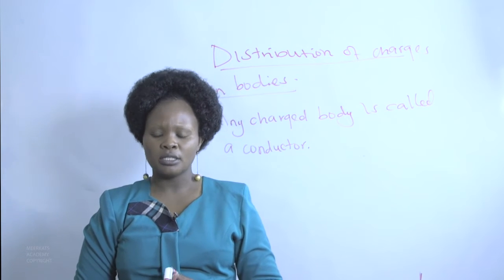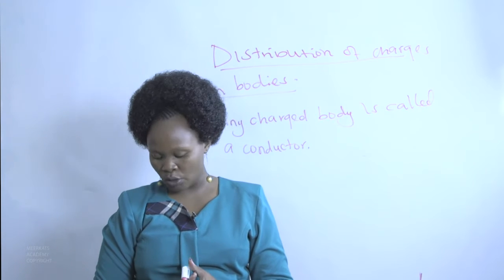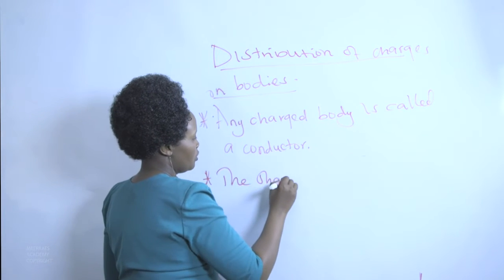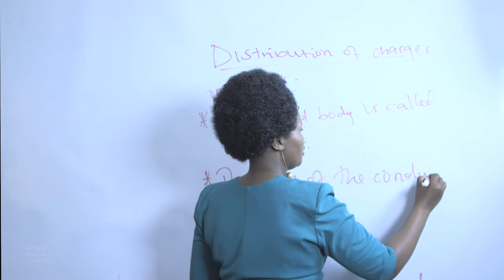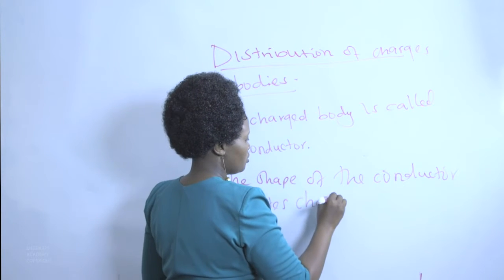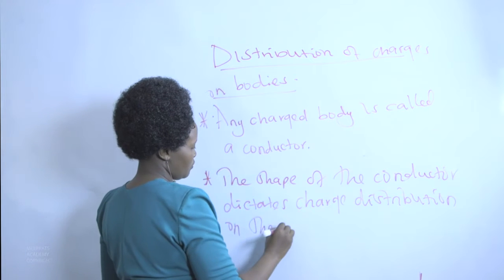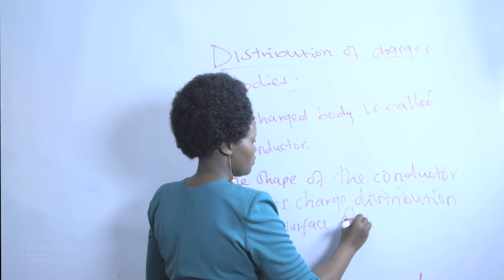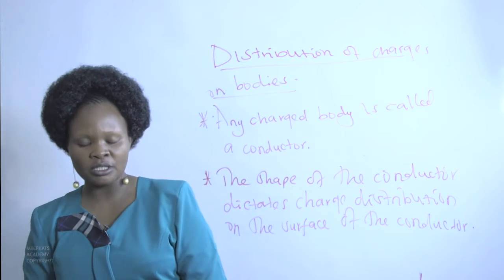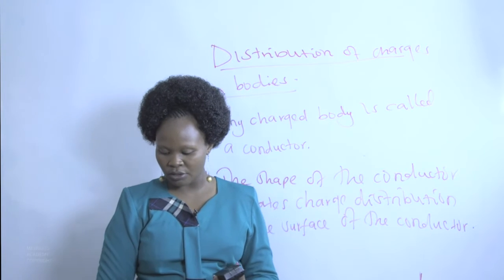What dictates how charges are going to be distributed on a conductor is what we call the shape of the conductor. The shape of the conductor dictates charge distribution on its surface. Let us take into consideration different shapes of conductors and see how shape influences the distribution of charges.